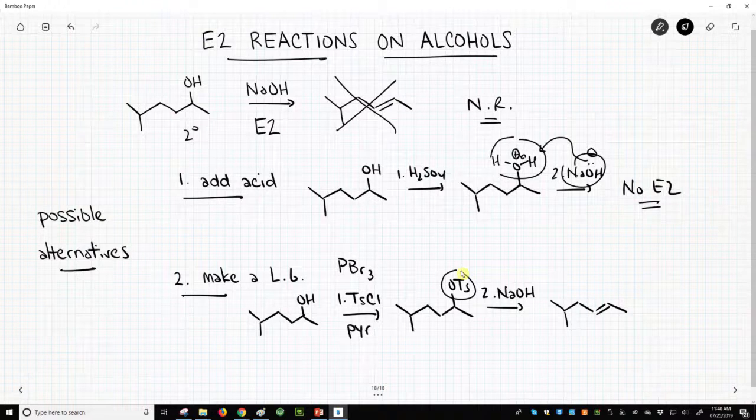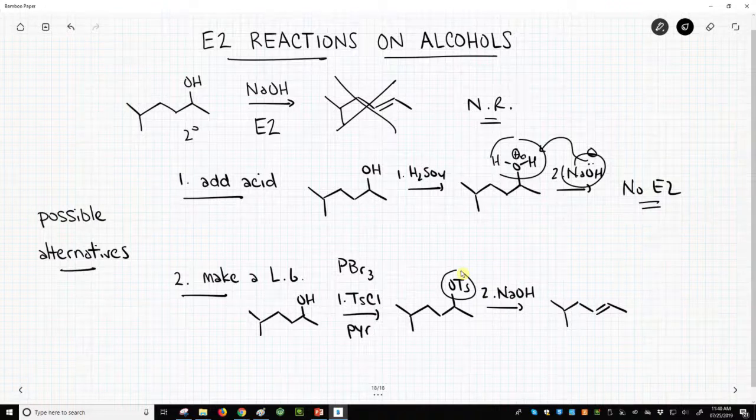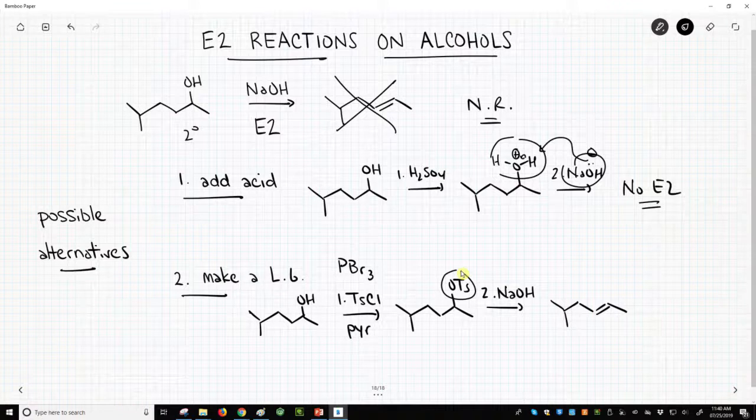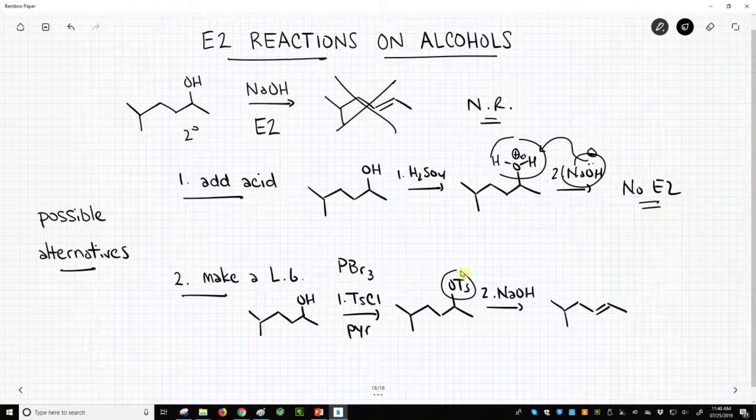So you can do E2 reactions on alcohols, but you have to first convert that alcohol into a leaving group. We can't do this through protonation. We need to convert it to a halide or a tosylate, and then we can perform an E2, just as we learned with the alkyl halides. So you can do it, but first you have to make a stable leaving group for the E2 reaction.